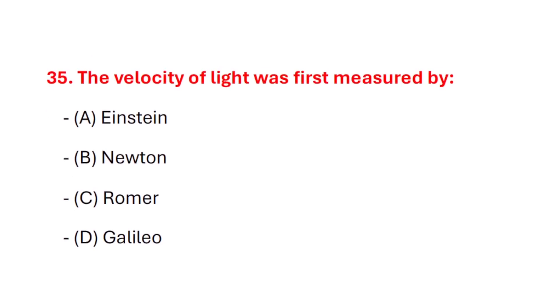Question 36. The velocity of light was first measured by? Correct answer is option C: Romer.